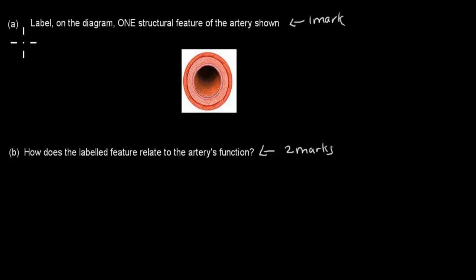So I'll read the actual question. It says, A, label on the diagram one structural feature of the artery shown. That's worth one mark. And just to show you the different parts, we've got one part here, one part here, one part here as well, and then we have this part.